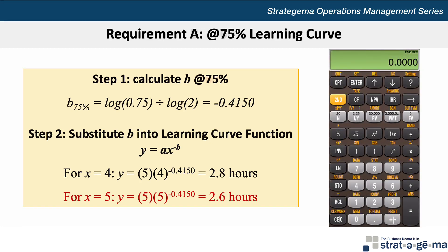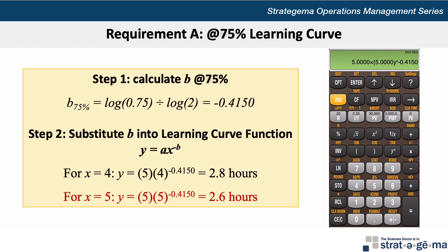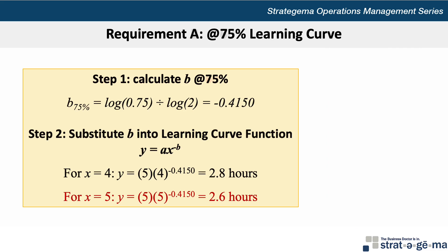Using the calculator, take 5 times, open parenthesis, 5, yx for the exponent function, then recall 1 to recall the calculated value of b stored in memory. Close parenthesis, and press the equal sign, and you should get the correct answer. You can see that the installation time drops with each successive installation, which makes sense as the technician should become more efficient with each installation.